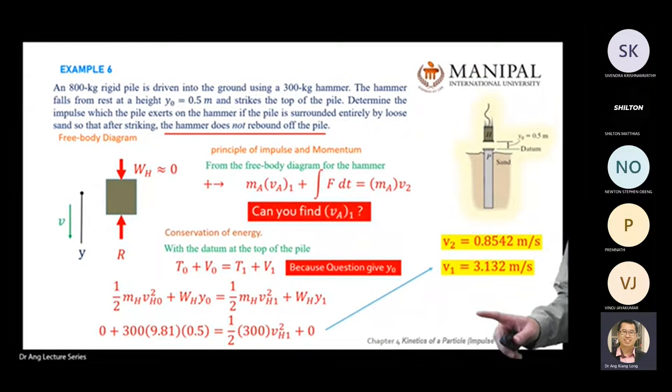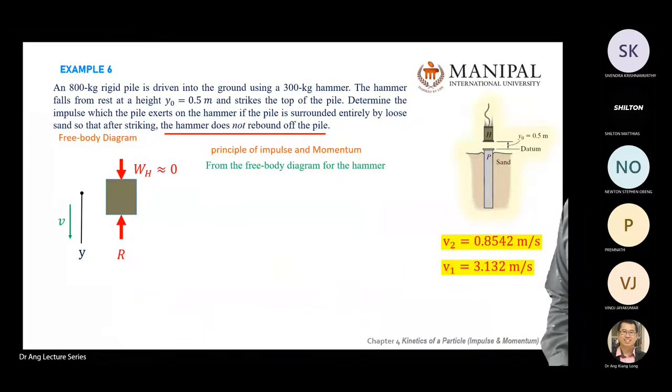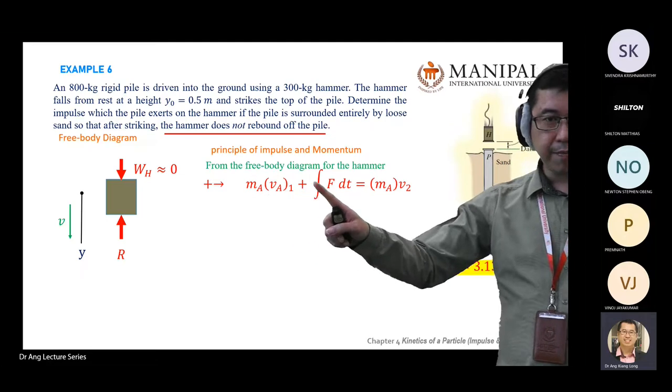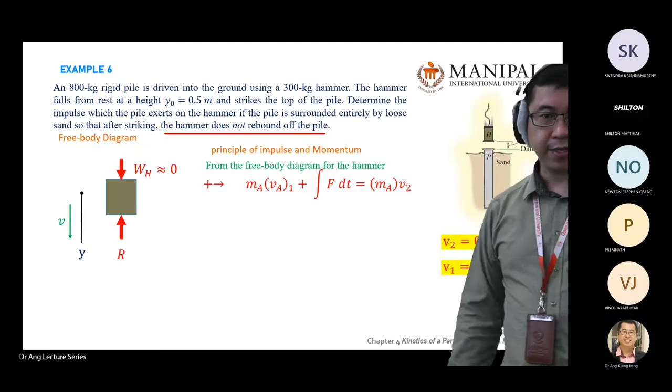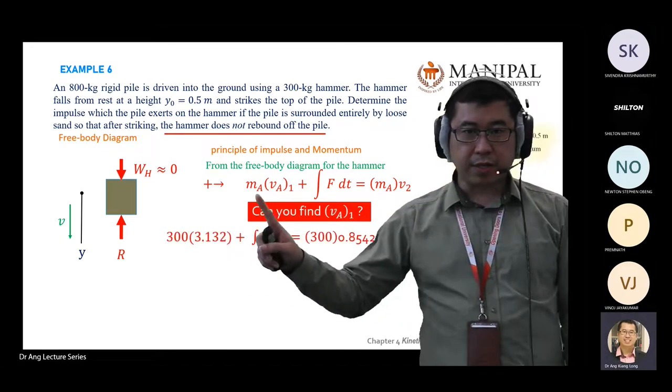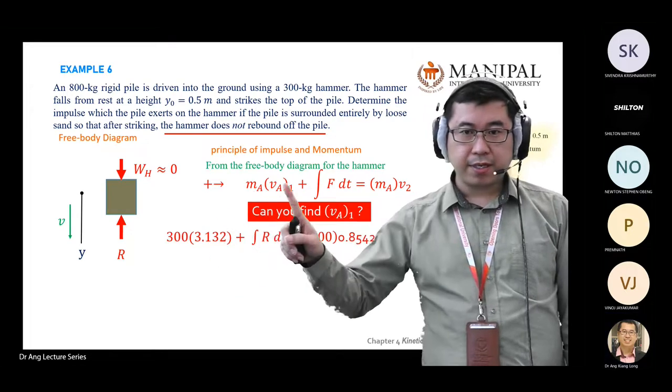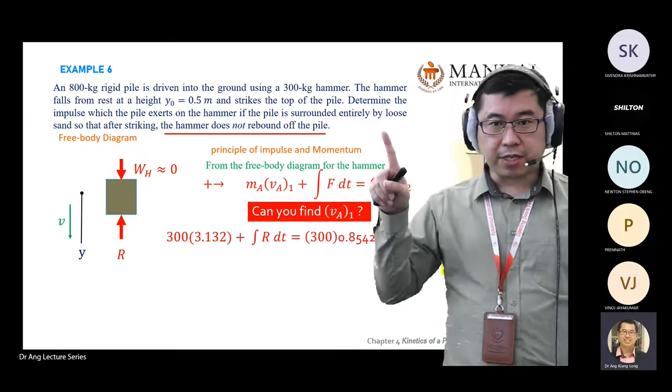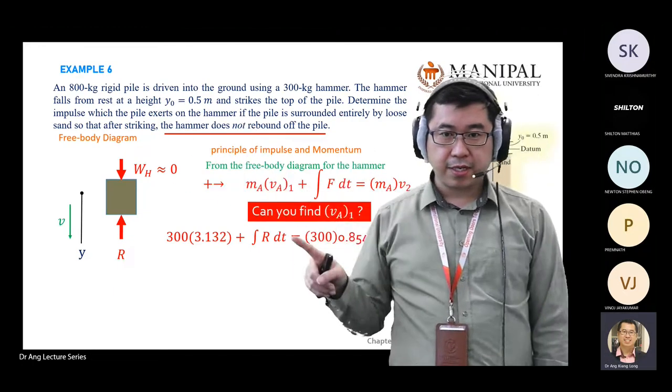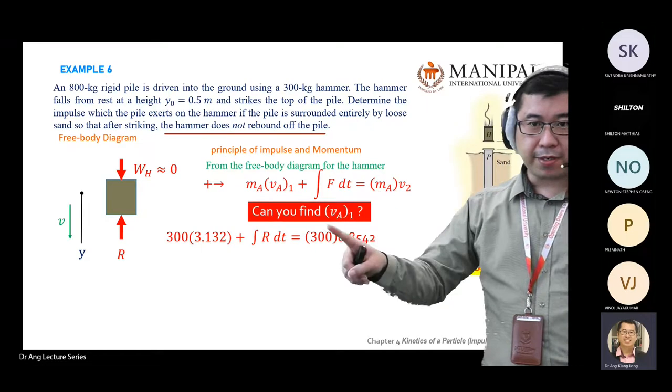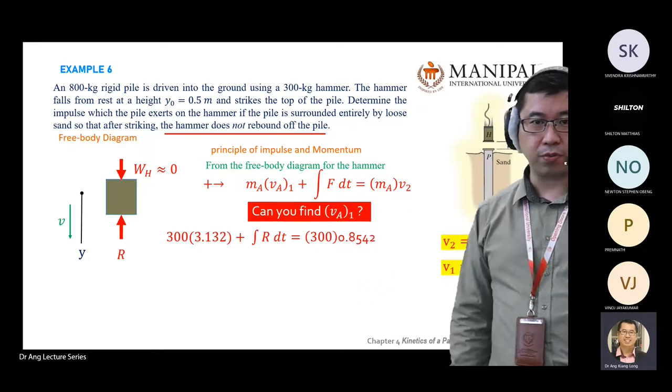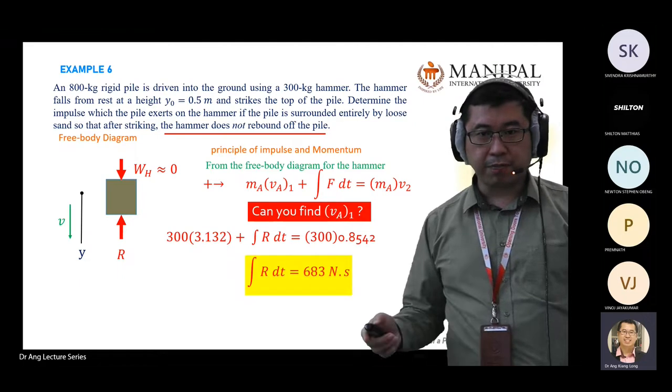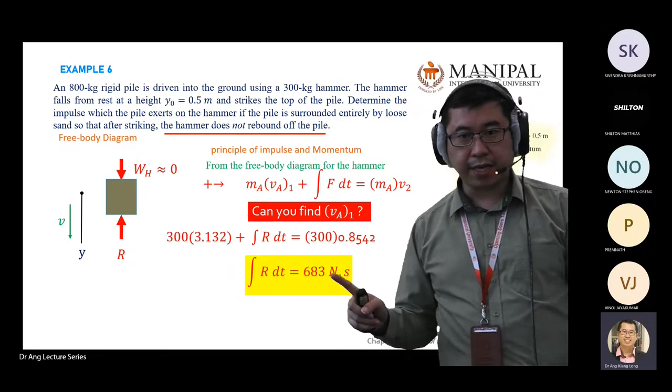Once you find v1 and v2, go back to the principle of impulse momentum that you wrote just now: mA·v1 plus impulse equals momentum after. You substitute the answer: m for hammer, v 3 point something you found just now, impulse you need to find - because the question asks you to find the impulse. Momentum: m still same 300, v1, v2 is 0.82 that you just found. You rearrange the equation and find the impulse. The impulse will equal to 683 newton-seconds.